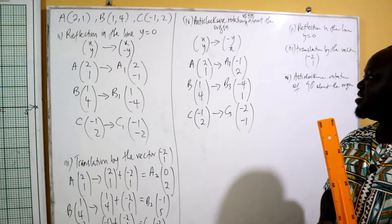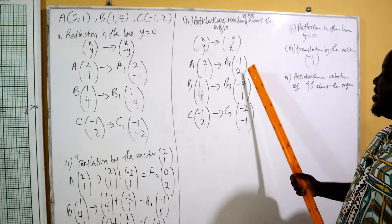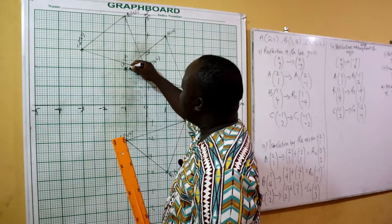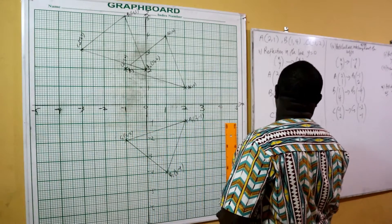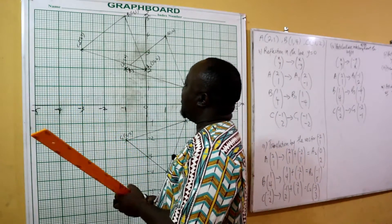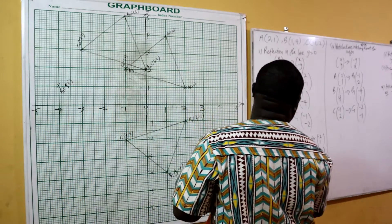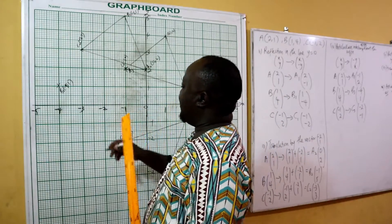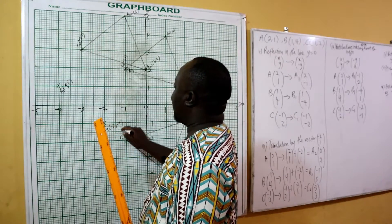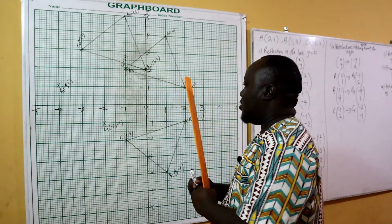With these three points we draw triangle A3B3C3. A3(-1,2) is located and named. B3(-4,1): x is negative four, y is one — we locate this point. C3(-2,-1): x is negative two, y is negative one — we locate this point. With all three points A3, B3, and C3 located we draw our triangle.